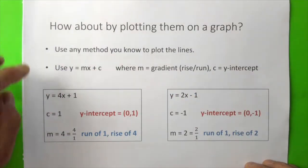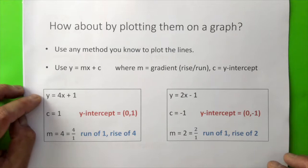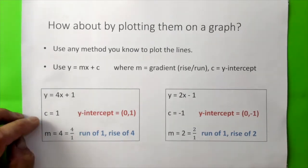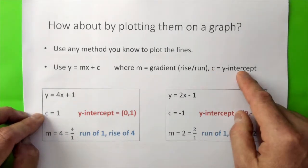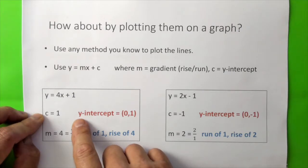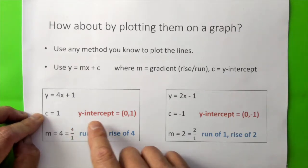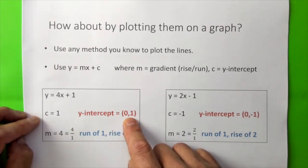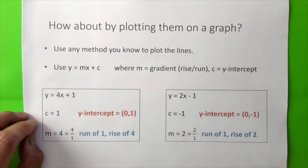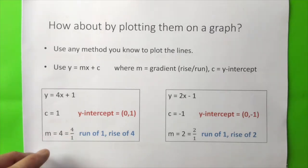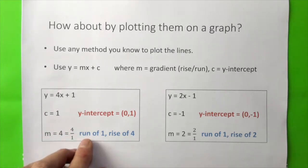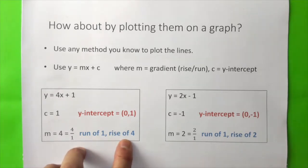Let's have a look at y equals 4x plus 1. We know c equals 1, the y-intercept. Therefore, the y-intercept is at (0, 1). Now m is 4, which is 4 over 1. Therefore, the gradient is a run of 1 and rise of 4.